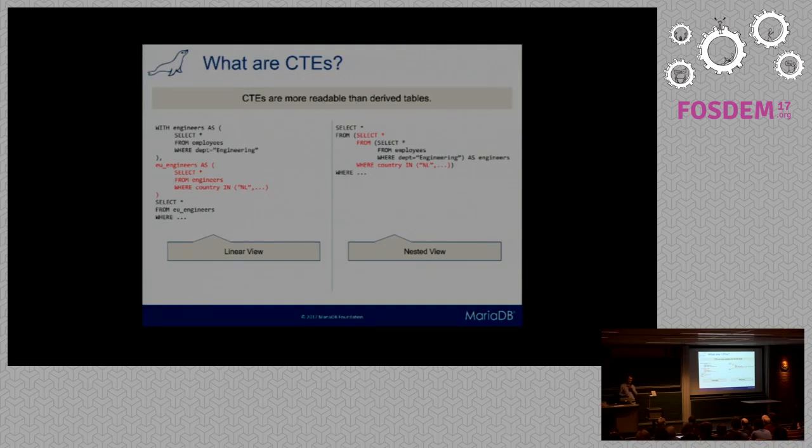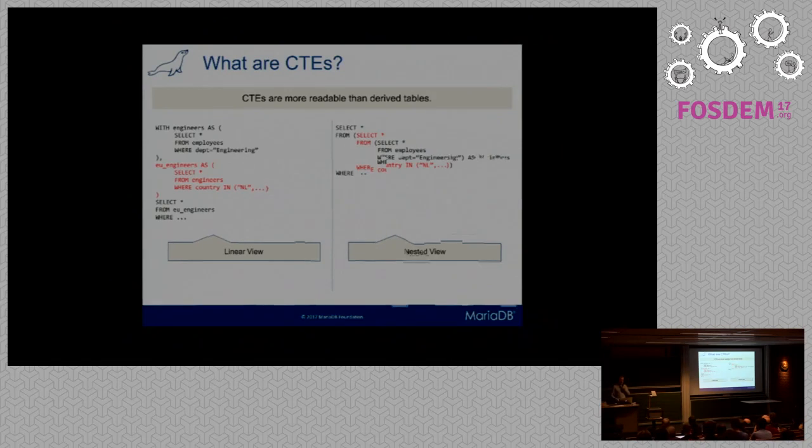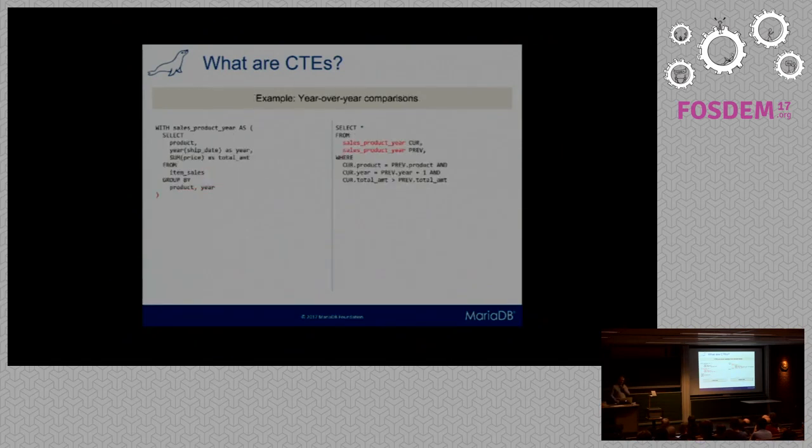With CTEs we can define this one at a time. So here we first define engineers, and then we want to select all the engineers that are from Europe. So we define another table expression, EU engineers, which references the first table. This makes things a lot more maintainable, but things get out of hand pretty quickly with 20 nested loops.